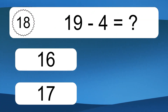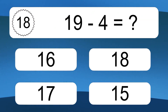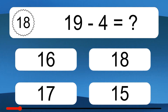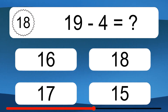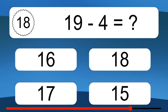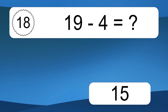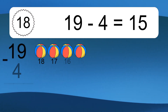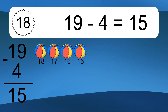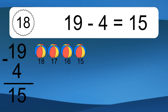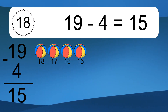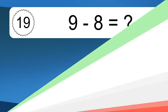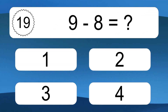19 minus 4 equals what? 19 minus 4 equals 15. Let's count it: 18, 17, 16, 15. 9 minus 8 equals what?